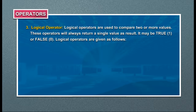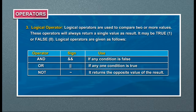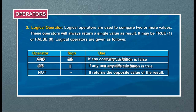Logical operators are used to compare two or more values. These operators always return a single value — either true (1) or false (0). Logical operators: AND (&&) — if any condition is false; OR (||) — if any one condition is true; NOT (~) — returns the opposite value of the result.